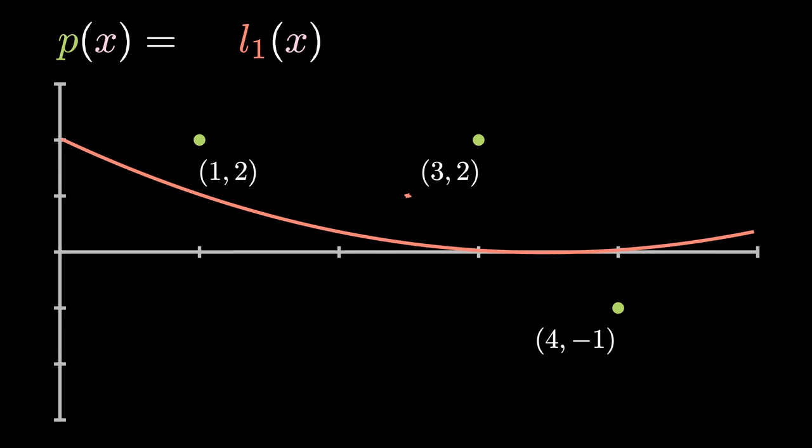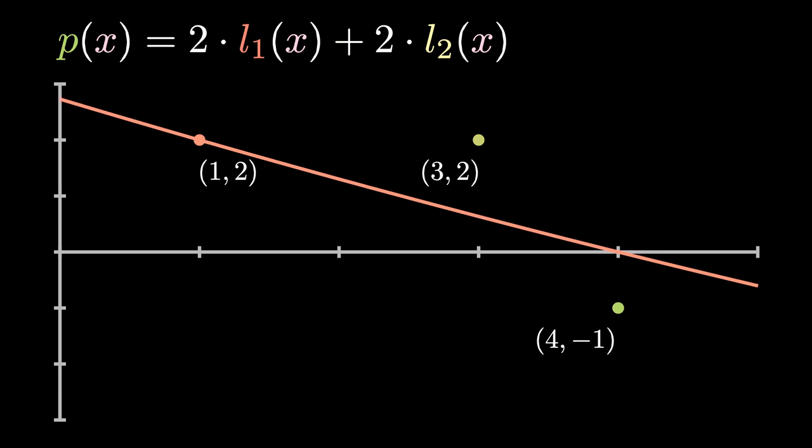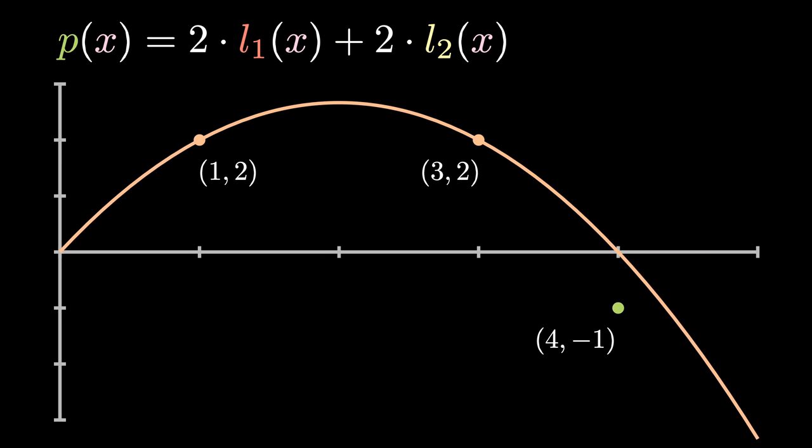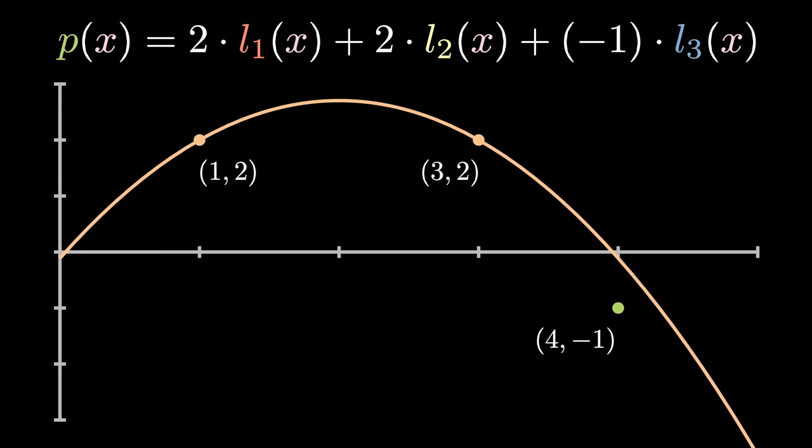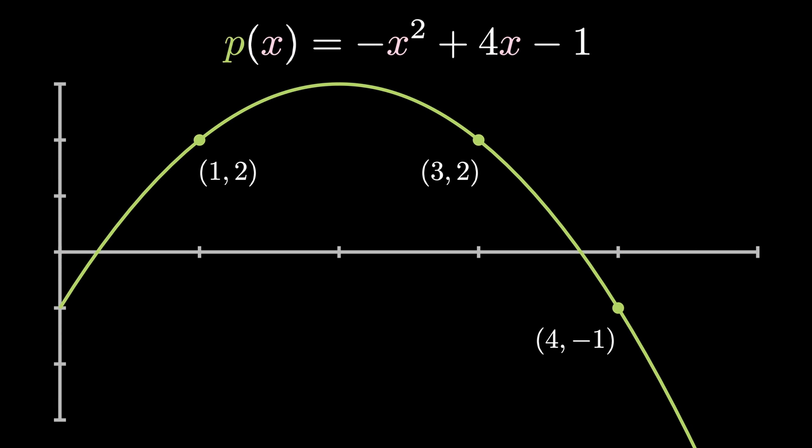And now to get the final polynomial, we can multiply each Lagrange polynomial by each y coordinate and sum them together. You can see how this isolates every coordinate point, since l_i(x) equals zero at every other point except x_i. This gives us a systematic way of coming up with the polynomial of degree n minus one that goes through a given n points.